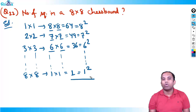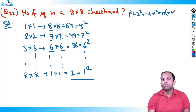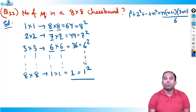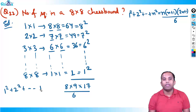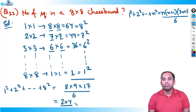So the total number of squares is the summation of 1² + 2² + ... + 8². The formula for sum of squares is n(n+1)(2n+1)/6. With n=8: 8 × 9 × 17 / 6 = 204. There are 204 squares in an 8×8 chess board.